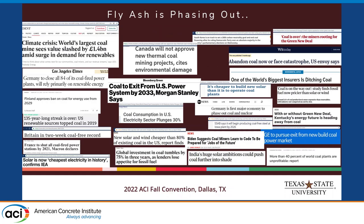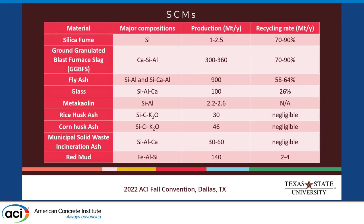This is an overwhelming slide, I know. We actually wanted to make it overwhelming because the message is: fly ash is facing out. Because we are shutting down coal-fired power plants in the near future, we will no longer be producing new fly ash. We know our industry has been using class F fly ash for a long time — it's not only economical but also makes concrete more workable and improves long-term strength. So we need to find other SCMs to replace fly ash.